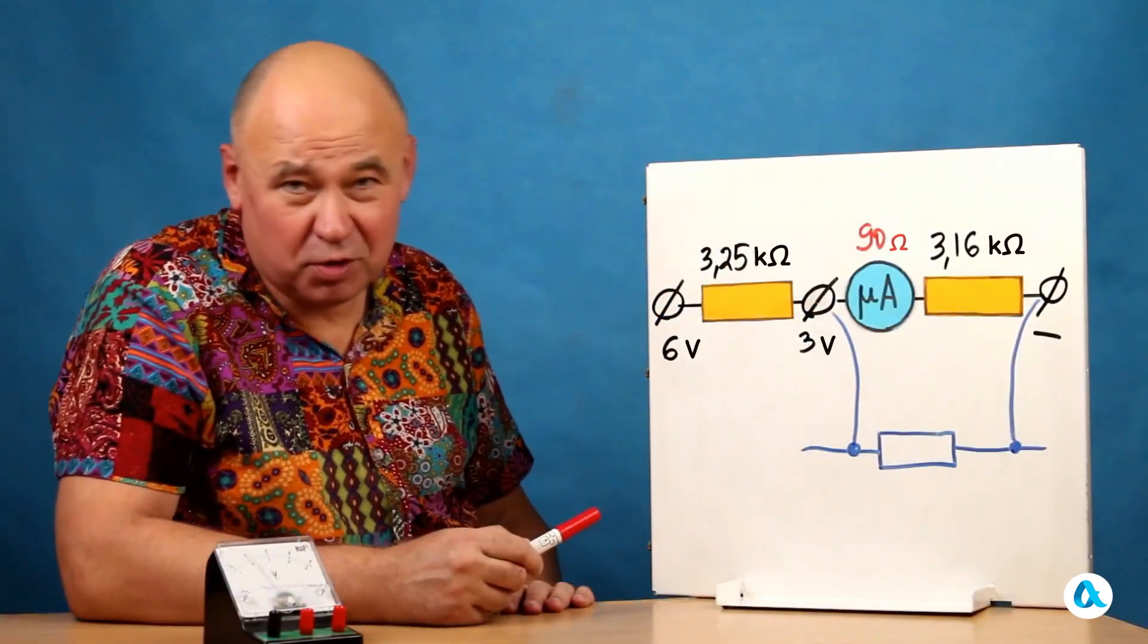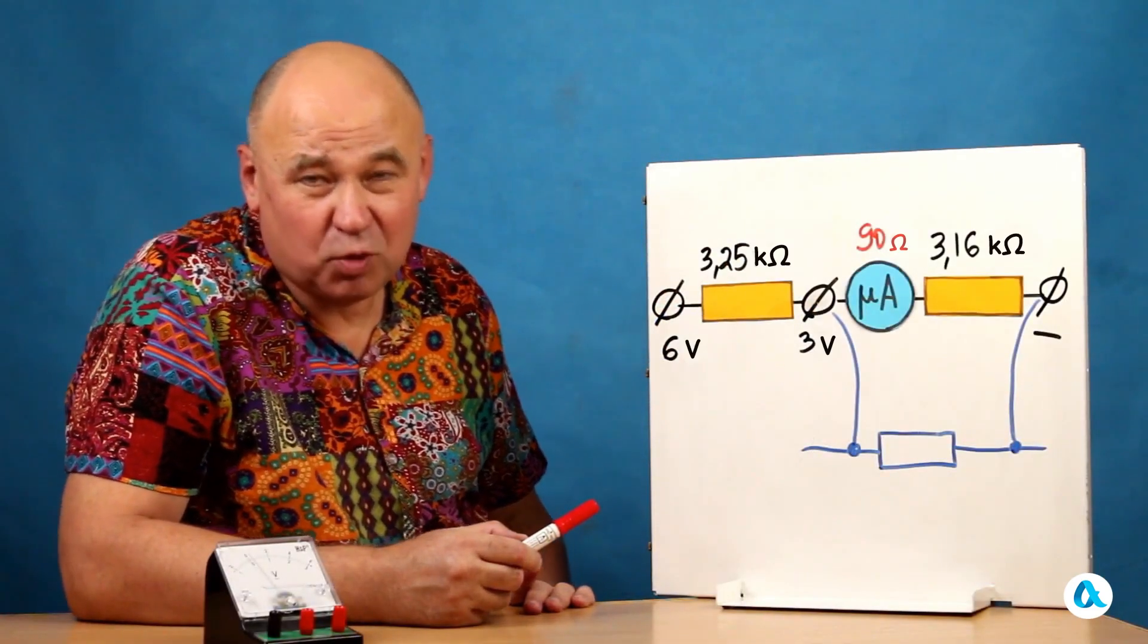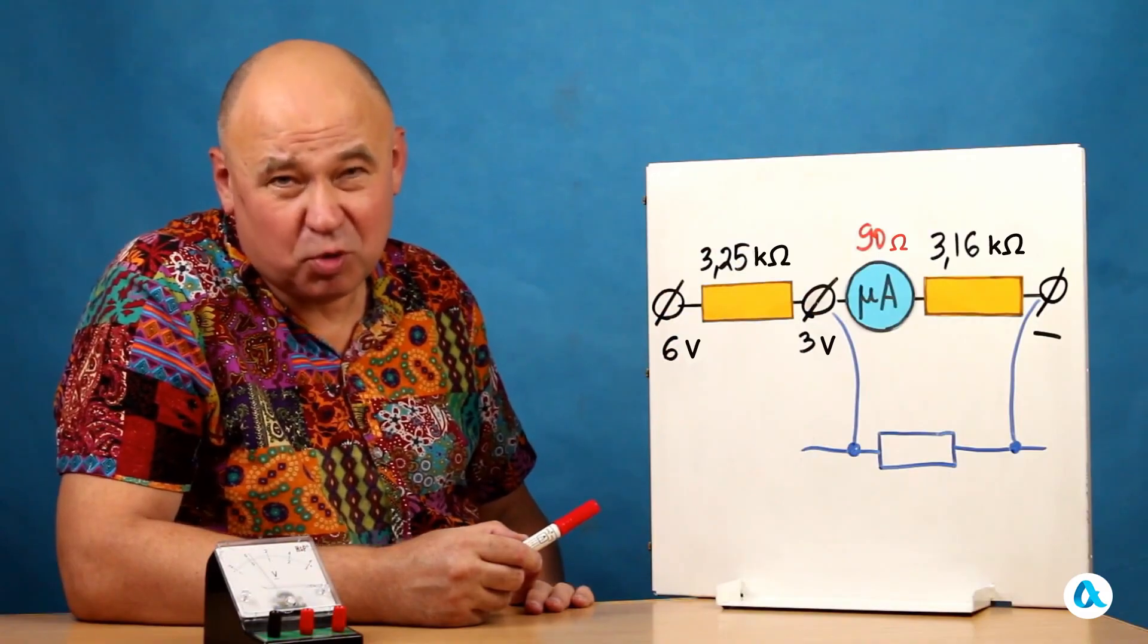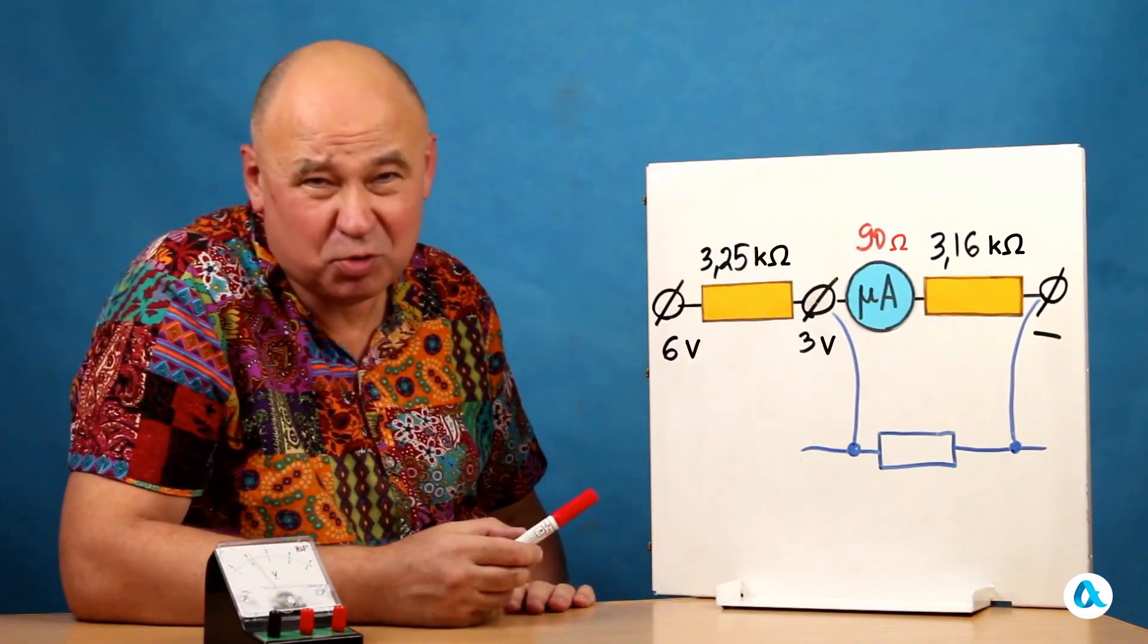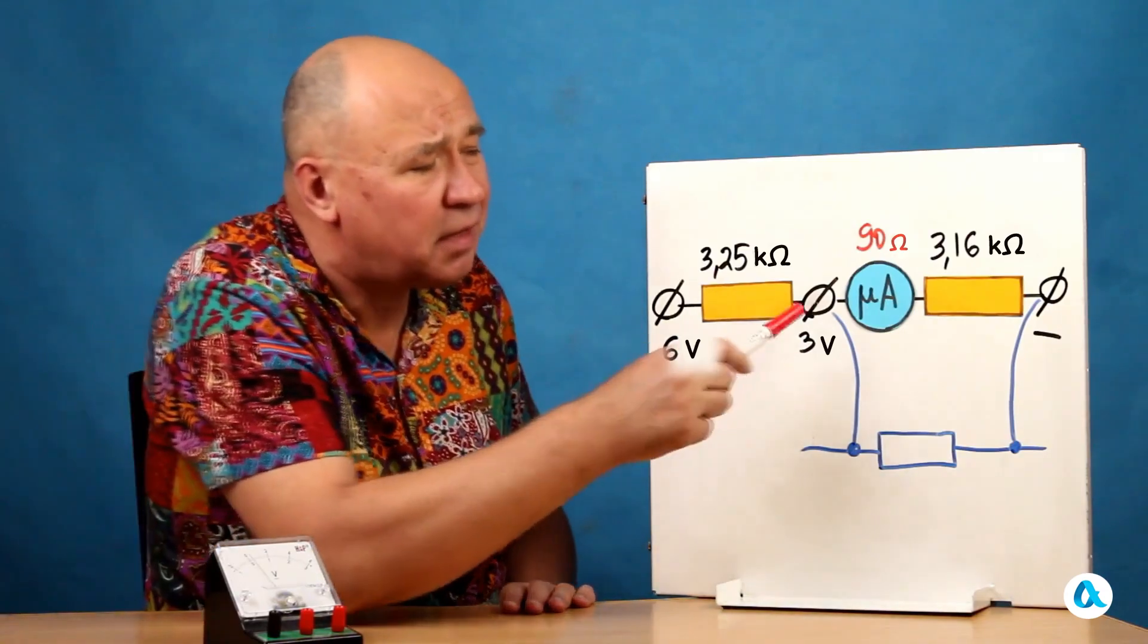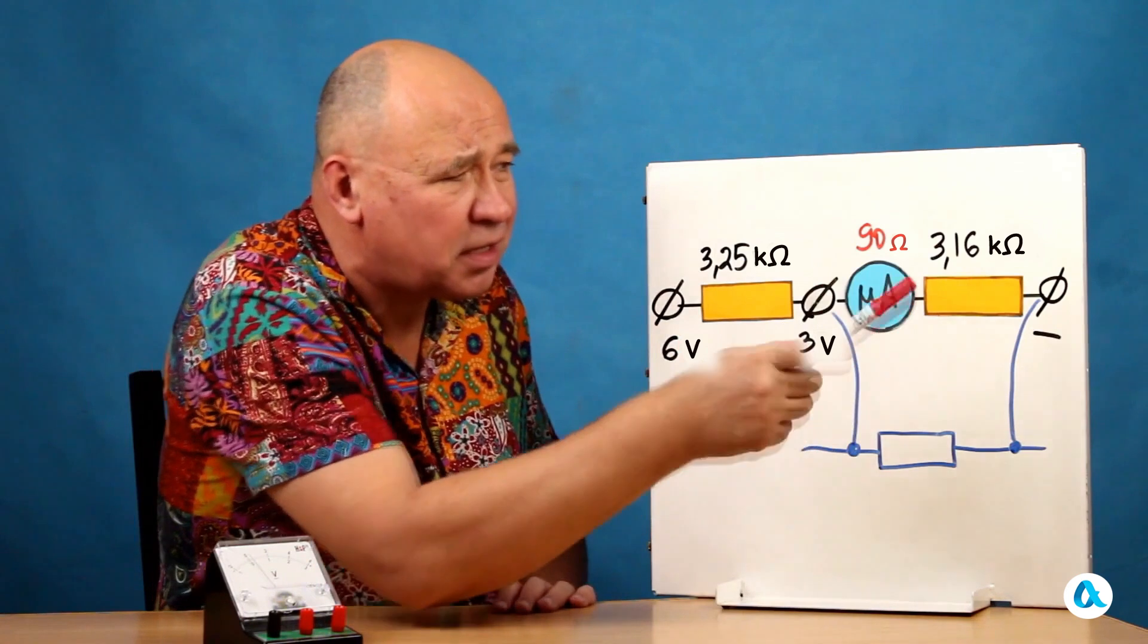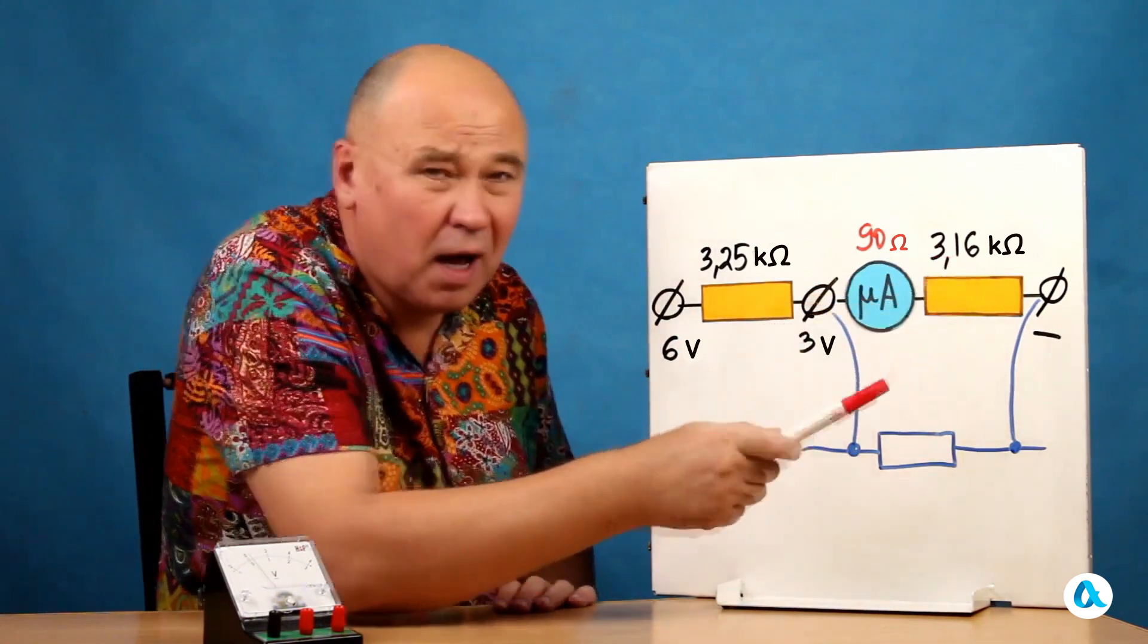This is a school instrument designed for conducting laboratory work. And it will be used to measure the voltage drop across relatively small resistances, no more than a few dozen ohms. And inside the device itself, a resistor with a resistance of just over 3 kilo ohms is connected in series with the microammeter.